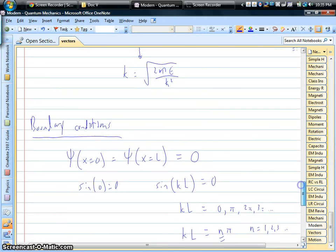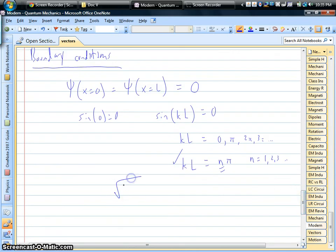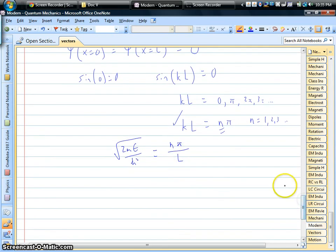So let's combine these two expressions for k and finish this off. K can be written as the square root of two times the mass times the energy over h-bar squared, or it can be written as an integer times pi over that distance. We can solve for the energy. We have to square things, so we're going to have n squared, pi squared, h-bar squared, all over two times the mass electron times this distance squared.